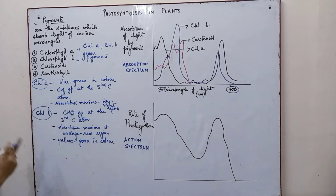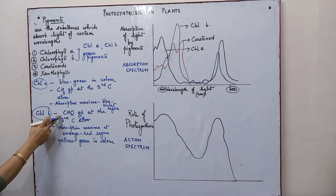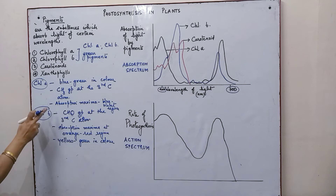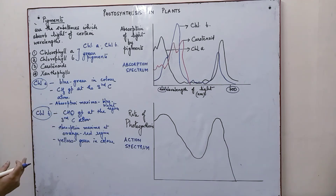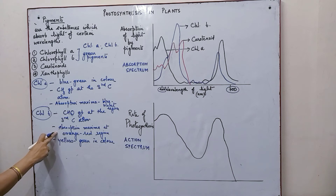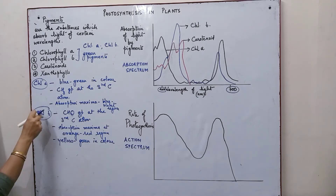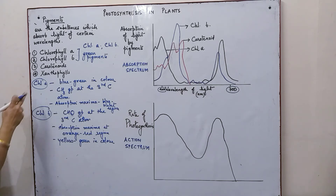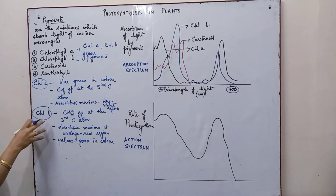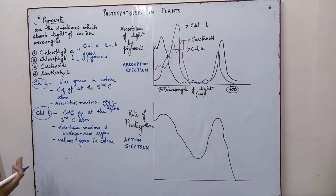To summarize: chlorophyll A has a methyl group at the third carbon atom which is replaced by an aldehyde group in chlorophyll B. Chlorophyll A shows absorption maxima at the blue-violet region and chlorophyll B at the orange-red region. Both chlorophyll A and B reflect green light and are present in large amounts in the chloroplast, which is why plants appear green.